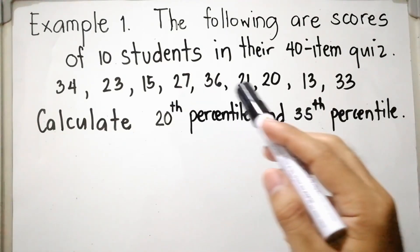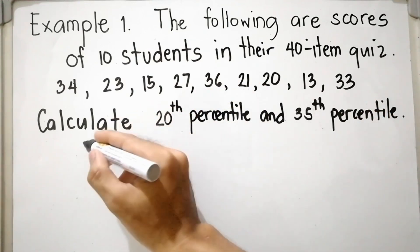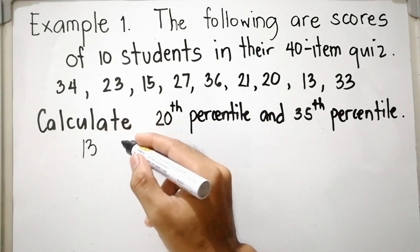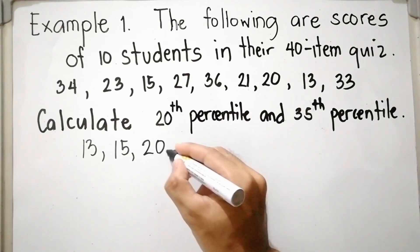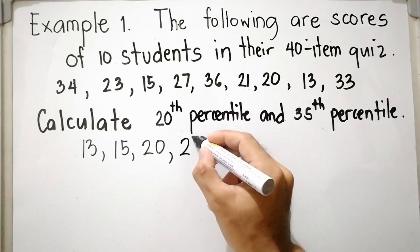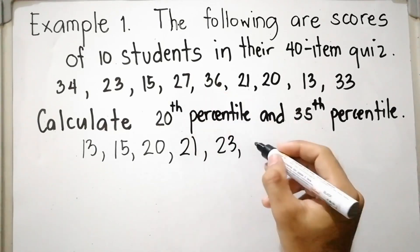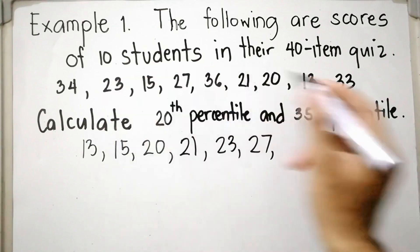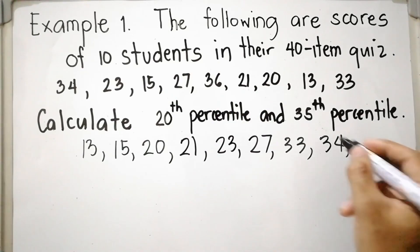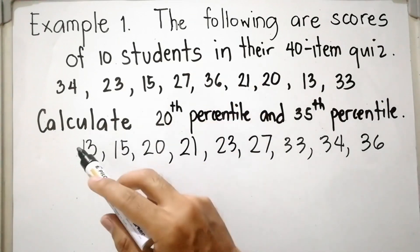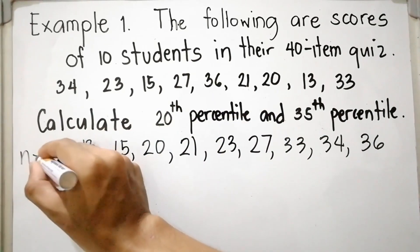The first step is to arrange the data distribution in ascending order from least to greatest: 13, 15, 20, 21, 23, 27, 33, 34, and 36. Counting the values, we have 9 scores, so n is equal to 9.